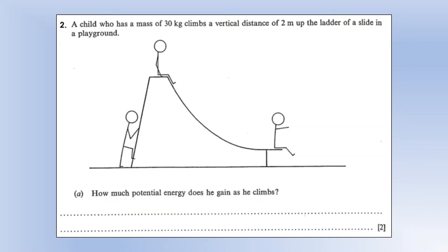In a playground, a child who has a mass of 30 kilograms climbs a vertical distance of 2 metres up a ladder. How much potential energy does he gain? It's going to be m×g×Δh. This time we get a positive number because they're going upwards, so we get 30 times 10 times 2 — 600 joules.